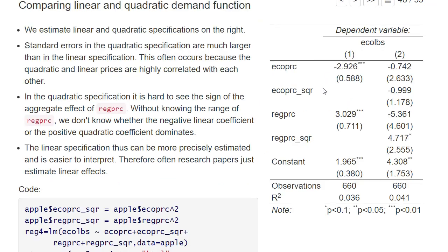On the right you see the regression results for our linear specification and for the quadratic specification. Comparing them, you see that in the quadratic specification we have much larger standard errors for the coefficients. If we add a quadratic term, we can much less precisely estimate the effect of the price of ecological apples on demand. This is because these two variables are highly correlated with each other, and if explanatory variables are strongly correlated it's harder to precisely estimate their effects.